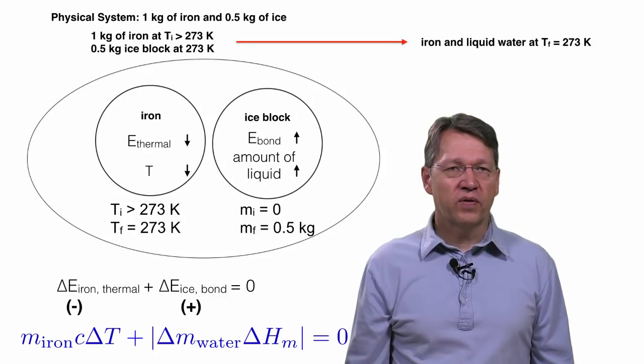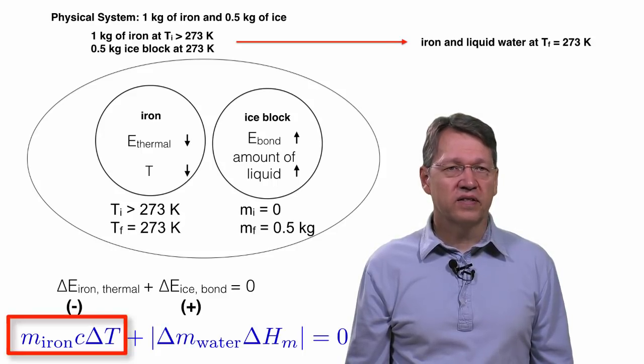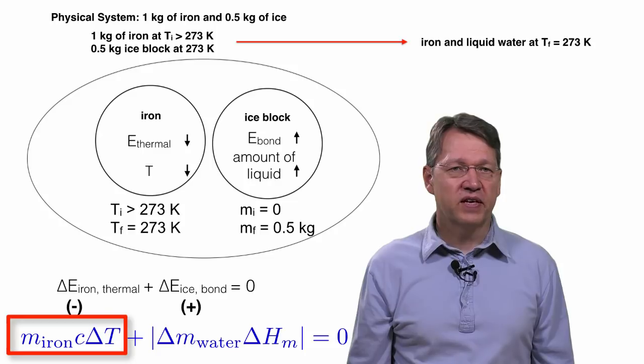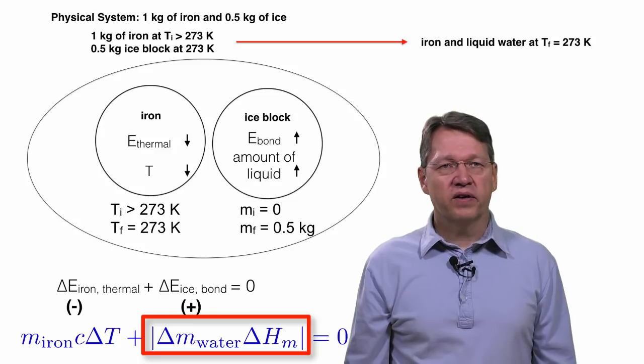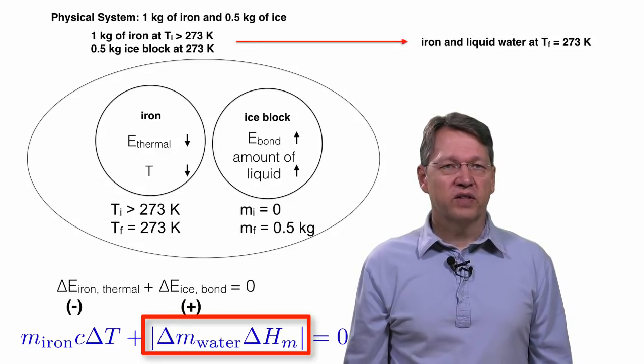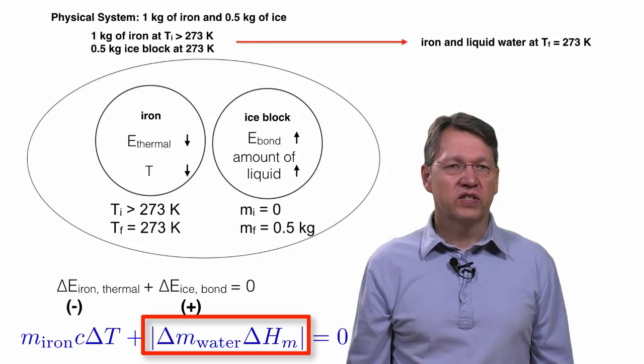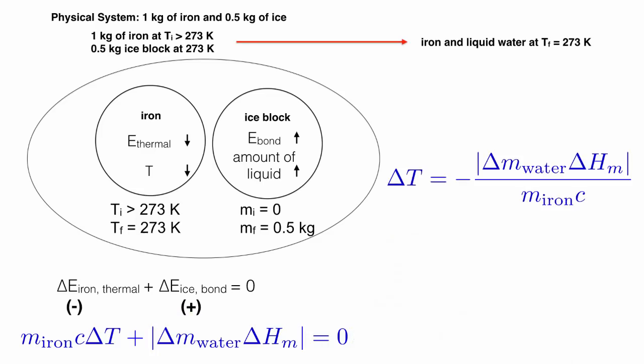Going further, we know that the change in thermal energy is the mass of the iron times its specific heat times its change in temperature, delta T. We also know that the change in bond energy is the absolute value of the change in the mass of the water times the change in enthalpy per unit mass. So we can simply solve for the change in temperature, delta T.